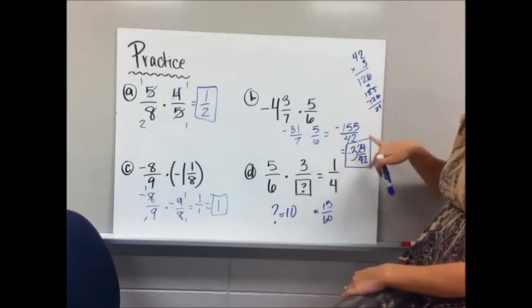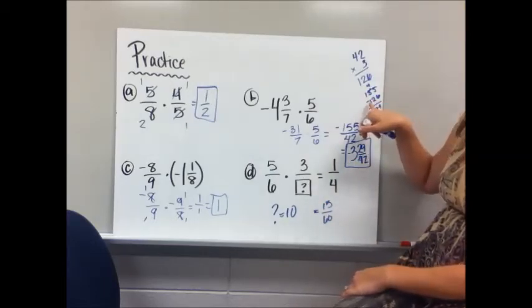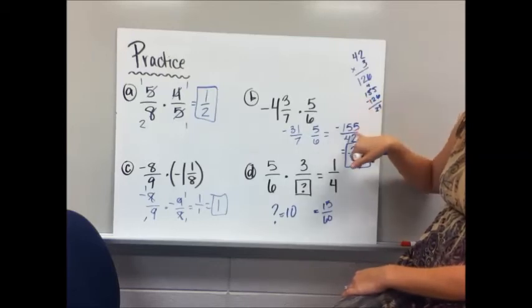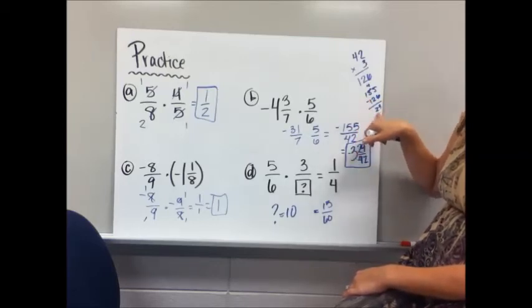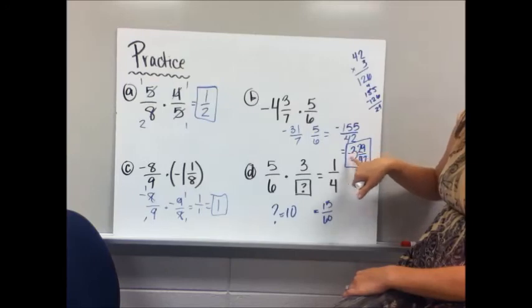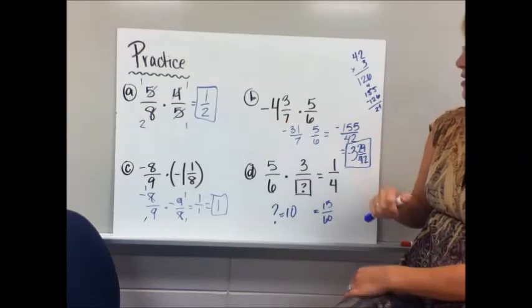So it goes in there three whole times, and then I got to figure out the fraction part, so I subtracted 126 minus 155. I got a remainder of 29, so it's negative 3 and 29 over 42. It's negative because I had a negative times a positive.